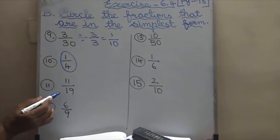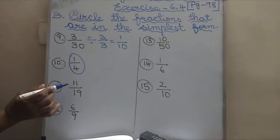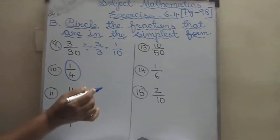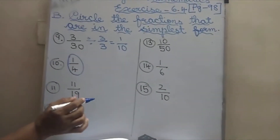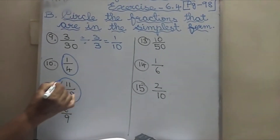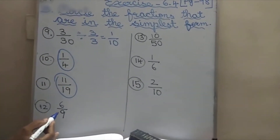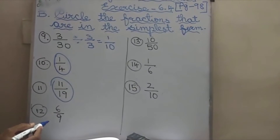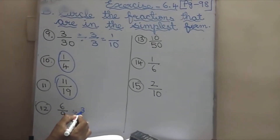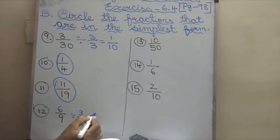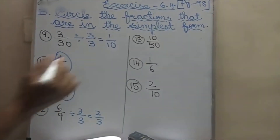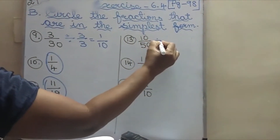11 by 19 — it will go in 11th table and 19th table. So you can't divide it further — this is also the simplest form. And then 6 by 9 goes in 3 table: 3 by 3. What answer will come? 2 by 3.